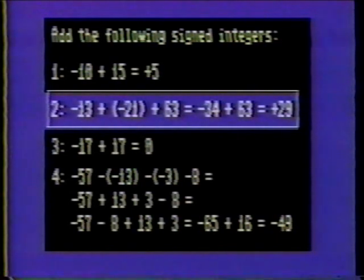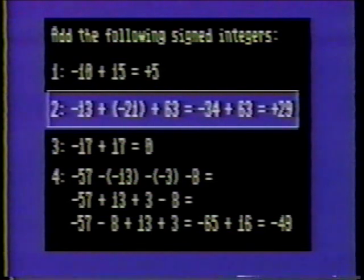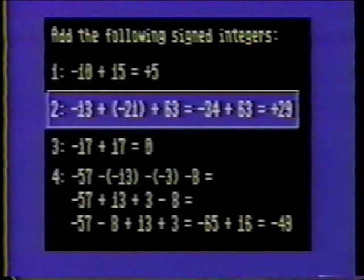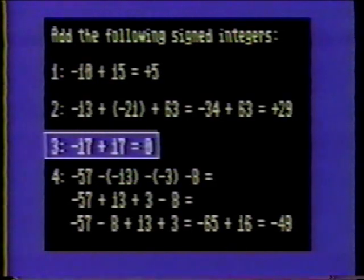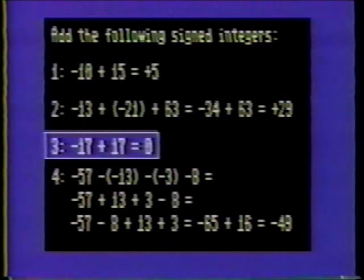First, combine the numbers with like signs. Thus, negative thirteen plus negative twenty-one is negative thirty-four. Negative thirty-four plus sixty-three is positive twenty-nine. Number three: negative seventeen plus seventeen. These numbers are additive inverses and cancel each other out. The solution is zero.